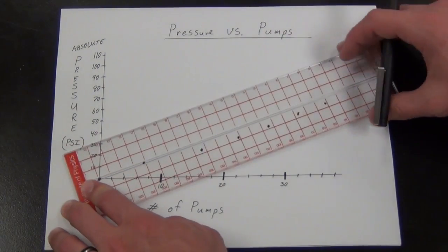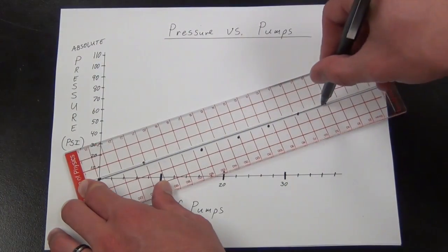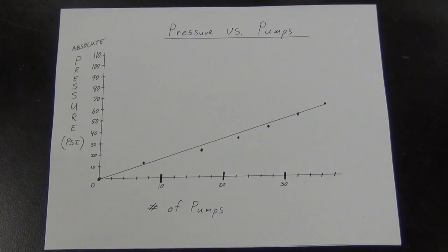Now, the reading that you're going to see on the pump is called gauge pressure. Which you're going to have to add the atmospheric pressure of about 14 or 15 psi's to. This also adds to the number of pumps. But the slope is always the same.